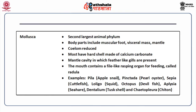Phylum mollusca is the second largest animal phylum. Body parts include muscular foot, visceral mass and mantle. The coelom is reduced. Most have a hard shell made of calcium carbonate. The mantle cavity contains feather-like gills. The mouth contains a file-like rasping organ for feeding called the radula. Examples include pila, sepia, loligo, octopus, aplysia, dentalium and chiton.